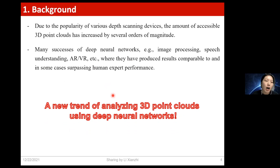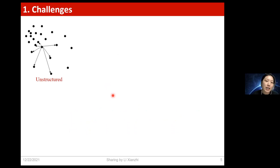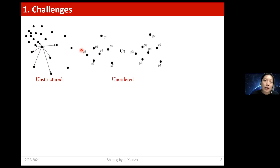However, we cannot directly apply deep neural networks developed for 2D images to 3D point clouds. There are several challenges. The first is that point cloud data is unstructured — points are not placed on a regular grid, and the distance to neighboring points is not always fixed, which is quite different from 2D images. The second challenge is that a point cloud is an unordered set of points; the order in which points are stored doesn't change the object or scene it represents. Due to these two challenges, we cannot directly apply CNNs to 3D point clouds.